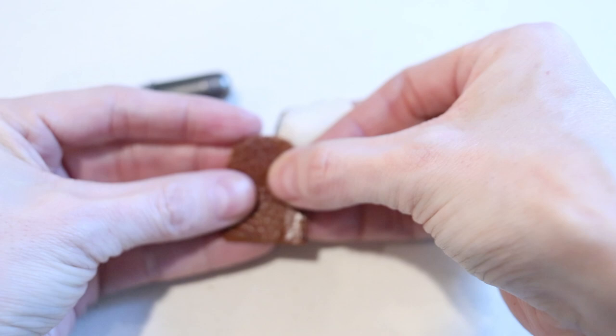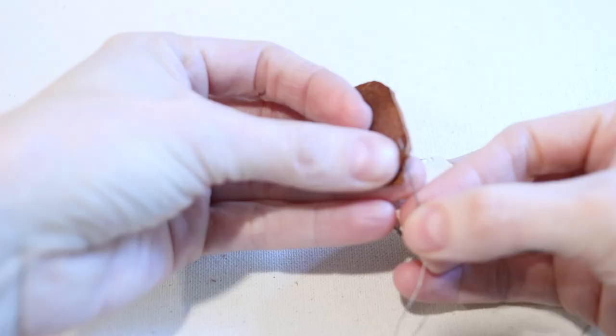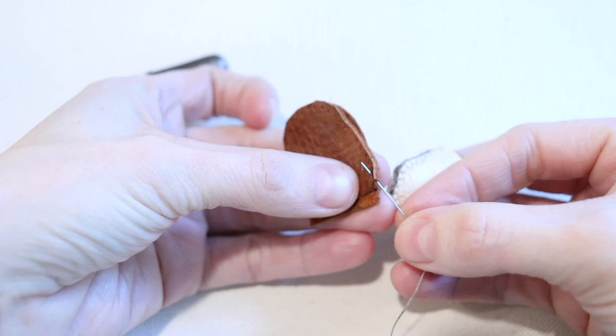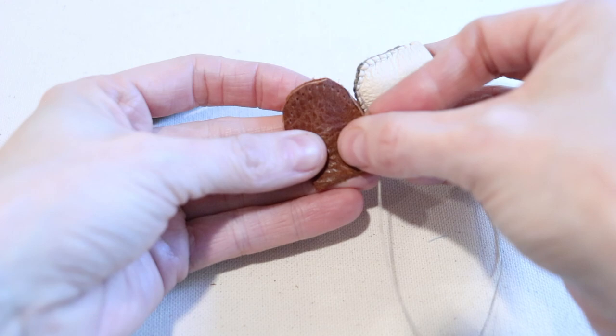Start by taking your two pieces of leather for your thimble and putting them wrong sides together. Then you're going to take your threaded needle. Starting from the center of those two pieces of leather, you're going to find that first hole that you've made with your machine. Pull up your thread through that first hole. The knot at the end of your thread will be secured in the center of your thimble.